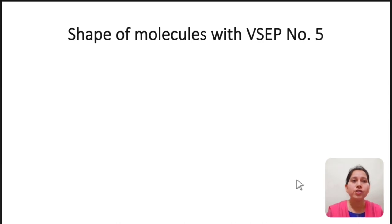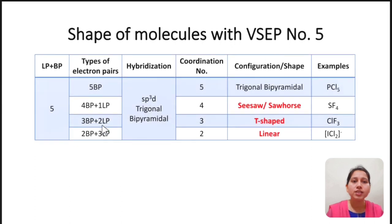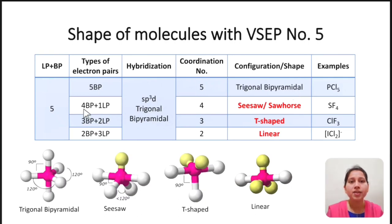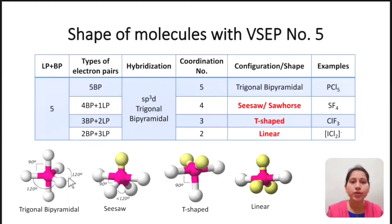Summary for molecules with five valence electron pairs: five bond pairs gives regular trigonal bipyramidal; four bond pairs and one lone pair gives see-saw; three bond pairs and two lone pairs gives T-shaped; two bond pairs and three lone pairs gives linear. In the linear case, all three lone pairs occupy equatorial positions and the two bond pairs are on the axial positions.